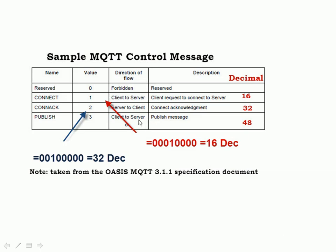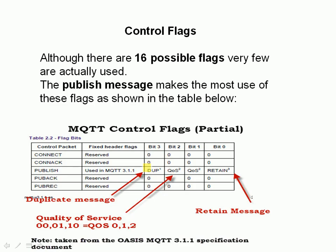There's a table taken from the specification: you can see the connect message has a value of 1 and the connection acknowledge has a value of 2, both in the most significant 4 bits of the byte. That translates to 16 and 32 respectively, shown here in binary. Looking at the flags, the connect flag is basically all zeros and the connection acknowledge flags are not really used. The only time they do get used is in the publish message — quality of service, retain, and duplicate — otherwise all other control message flags are zero.